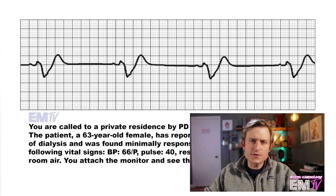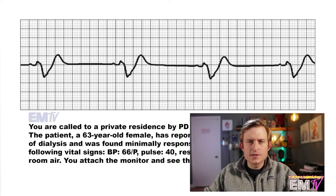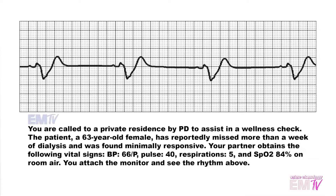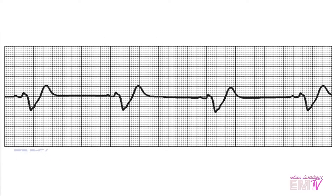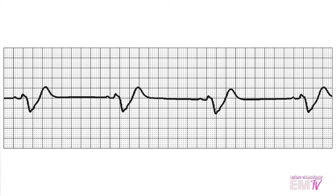This may be a scenario that you've seen in the past. Let's go ahead and first examine the rhythm and find out what it is. The first thing I like to do with every rhythm is count the R waves to determine its rate. I'm only seeing four R waves here, so the rate is 40 BPM.